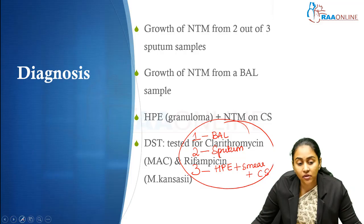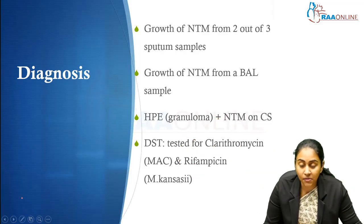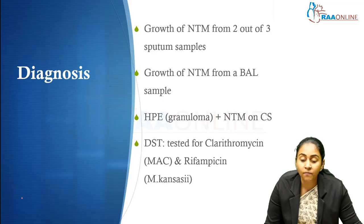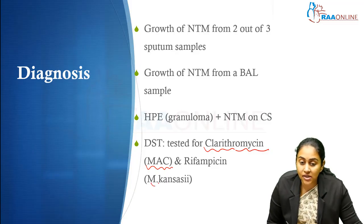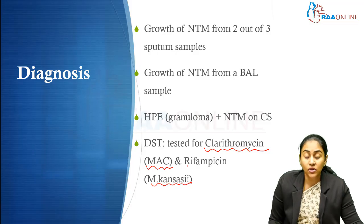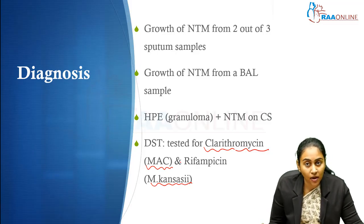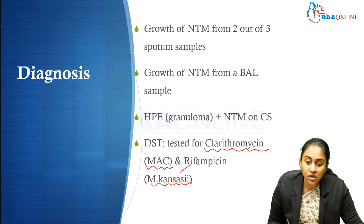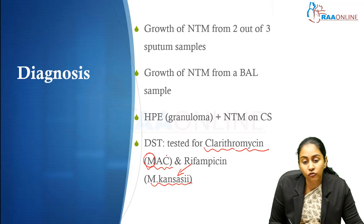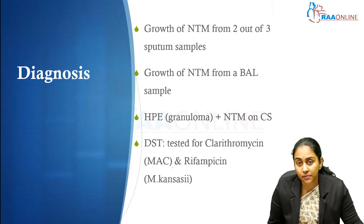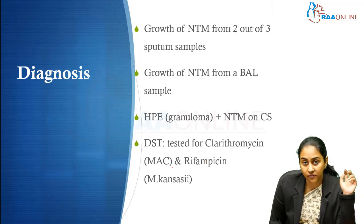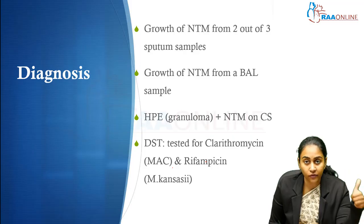Additionally, remember to test for clarithromycin susceptibility and rifampicin susceptibility. Particularly when you are dealing with MAC, it is very important to check for clarithromycin susceptibility. For Kansasii, remember it is a lot like TB, so just like rifampicin is a backbone of TB treatment, so it is for Kansasii — always check for rifampicin resistance. Two important drugs we need to screen for resistance: one is clarithromycin and the other is rifampicin.